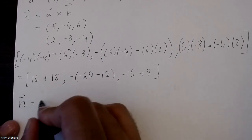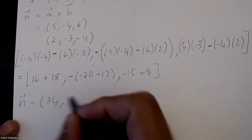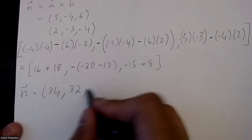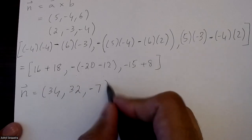Basically, my normal vector is just 34, 32, and negative 7.